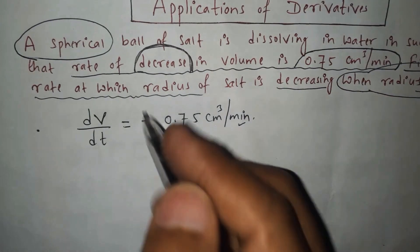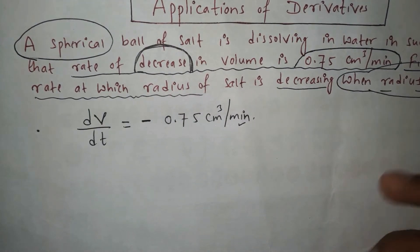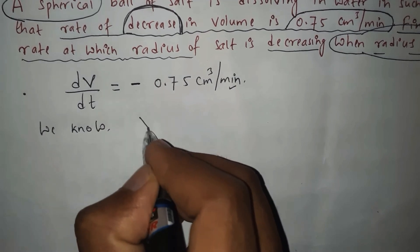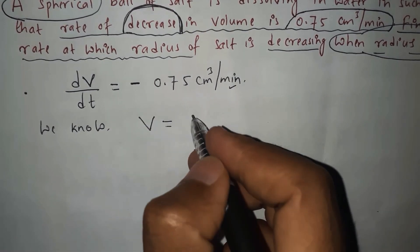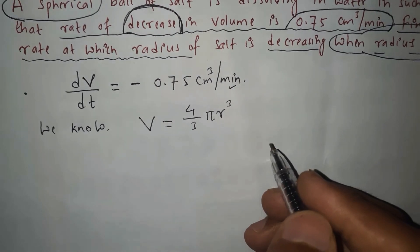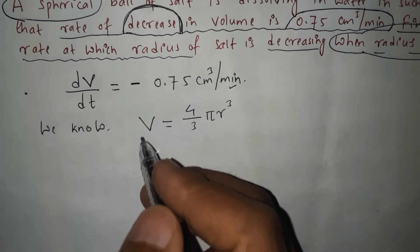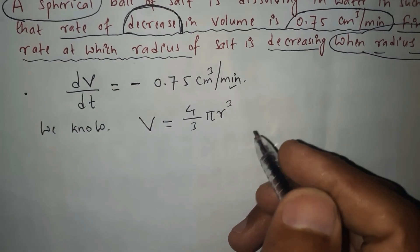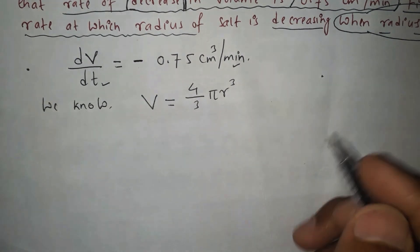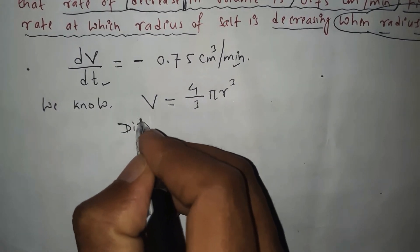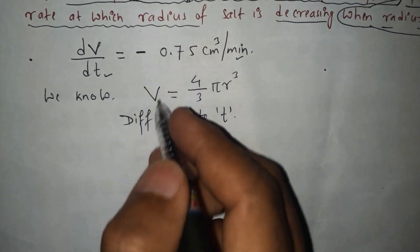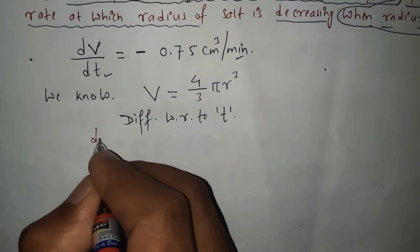We have to find the rate at which the radius decreases when the radius is 6 centimeters. First of all, we know the volume of a sphere: V = 4/3 π r³. Let's differentiate this equation with respect to time t, because we know dV/dt.